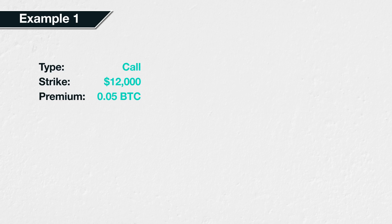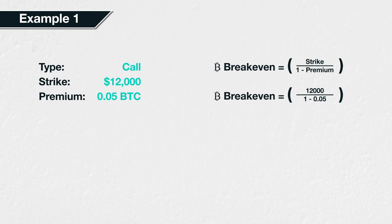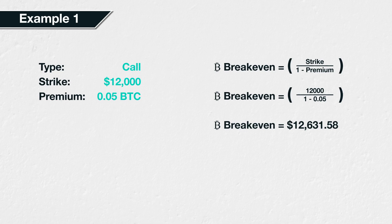Example 1. Let's use the option from example 1 in the previous lecture. This was a Bitcoin call option with a strike price of $12,000 and a premium of 0.05 BTC. The breakeven is calculated as strike price divided by one minus the premium: $12,000 divided by 1 minus 0.05, which gives us a breakeven of $12,631.58. This means that if the Bitcoin price is $12,631.58 when the option expires, the trade will have broken even, leaving your Bitcoin balance the same as it was before the trade.